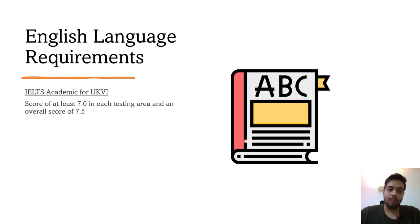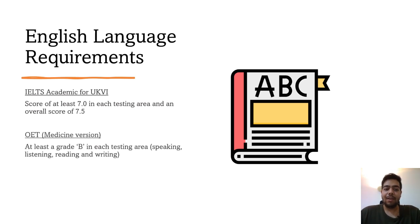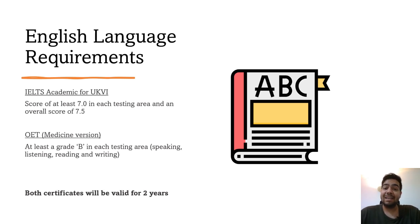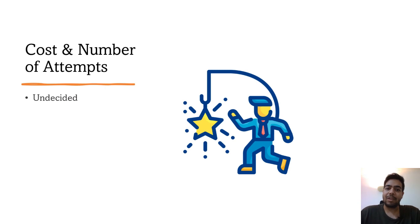Regarding English language requirements before you can take the AKT: if you're going for IELTS Academic for UKVI, you'll need to score at least 7 in each testing area and an overall score of 7.5. If you're going for OET, you'll need the medicine version and at least a grade B in each testing area. Both certificates are valid for two years, which is similar to the existing requirements for PLAB 1 and PLAB 2. The cost and number of attempts are still undecided, and the GMC hasn't given any information about either.